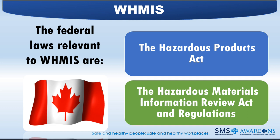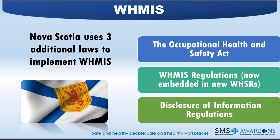There are two federal laws relevant to WHMIS in Canada. The Hazardous Products Act places duties on suppliers who sell or import a hazardous material for use in a workplace to provide supplier labels and safety data sheets to their customers. The Hazardous Materials Information Review Act and Regulations sets out how confidential business information will be handled at the federal level, permitting some exemptions from the disclosure of trade secrets claimed by suppliers. Nova Scotia uses three additional laws: the Occupational Health and Safety Act, the Disclosure of Information Regulations, and Workplace Health and Safety Regulation, where WHMIS is embedded.